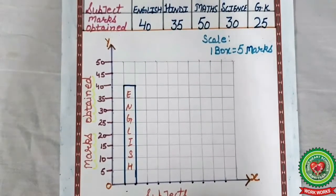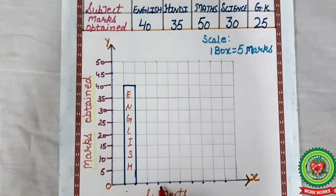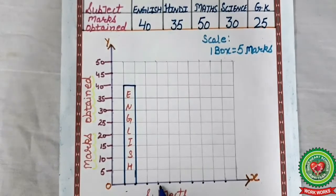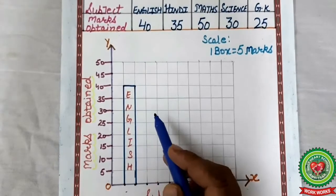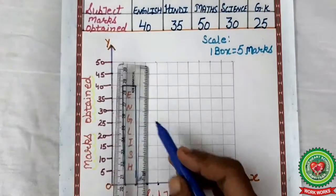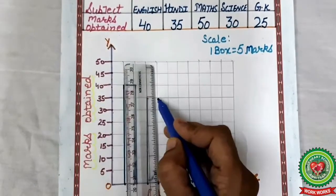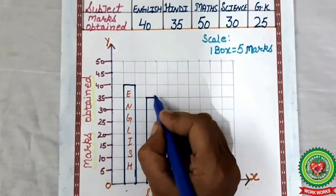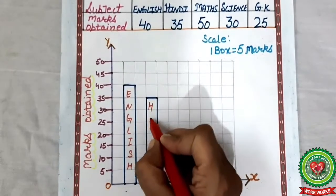Now we will move to the second subject. Which is the second subject? Hindi. How many marks? 35. Now we will take the next two points. For every subject, we will take two points. Next two points: how many marks? 35. This is 35. Now we will draw lines in front of 35 and draw another column of 35. This is the column of Hindi.